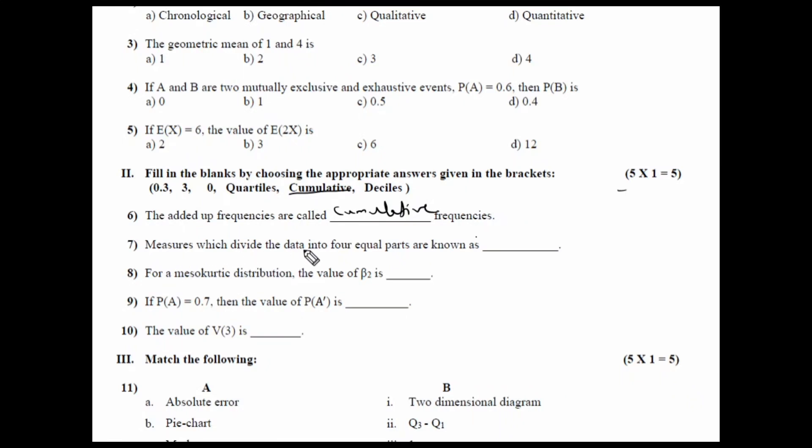The measures which divide data into four equal parts are called as quartiles. So, they are your quartiles.